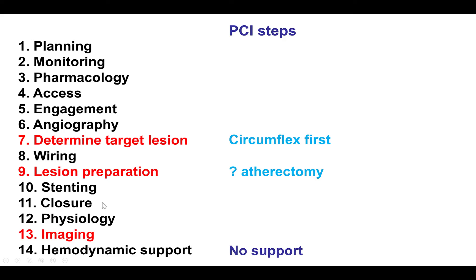These are the 14 steps of percutaneous coronary intervention. A very important question in this particular patient is which lesion to do first, as both are significant and require revascularization. We considered the circumflex to be easier and decided to do this first before attempting PCI of the LAD. There was also a question about the need for atherectomy given the severe calcification. Our plan was to first see if a balloon would dilate; if not, perform atherectomy, and also use intravascular imaging given the calcification to ensure the vessel was well treated and the stents well expanded. The patient had a normal ejection fraction, so no hemodynamic support was needed.